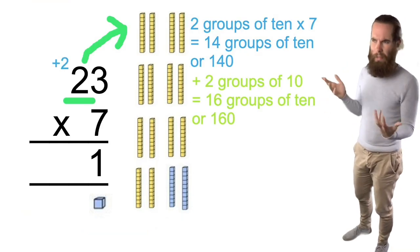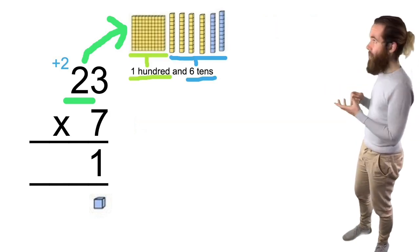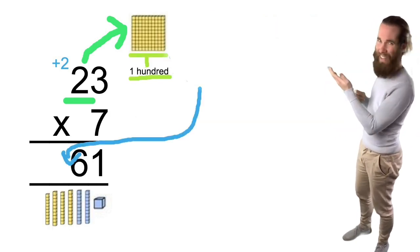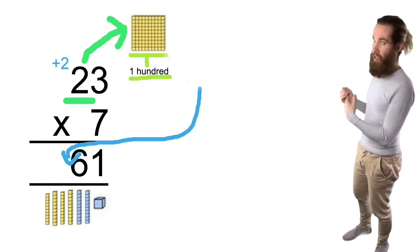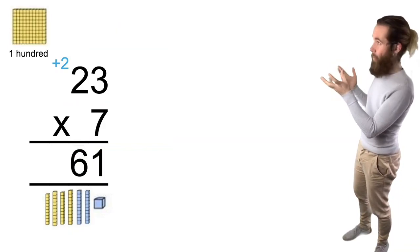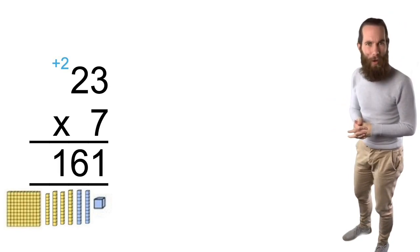What do I write down? Well actually now I've got 100 and six tens. So I put the six in the tens column and I've got this 100 I need to add. I don't have any other 100, so seven times zero is zero plus 100, or one. One group of 100 is one group of 100, so my total is 161.